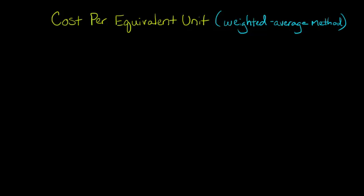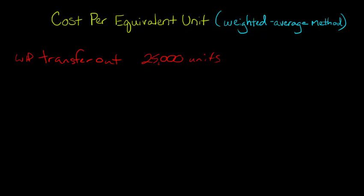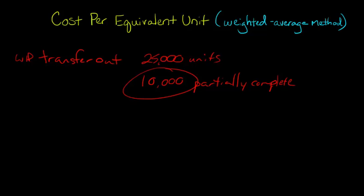The basic concept behind Equivalent Units is that if we transfer out of our WIP account — our work in process — let's say 25,000 units, and then we have 10,000 partially completed units, and let's say those 10,000 are about 25% done.